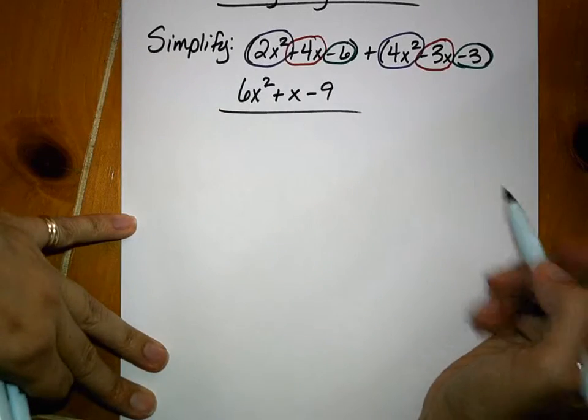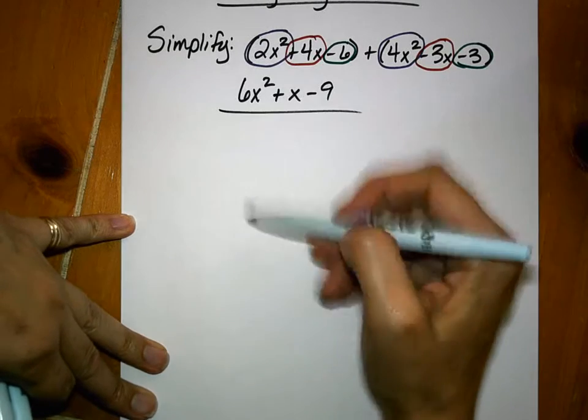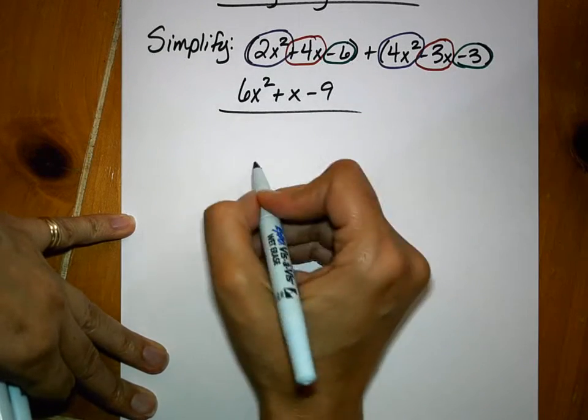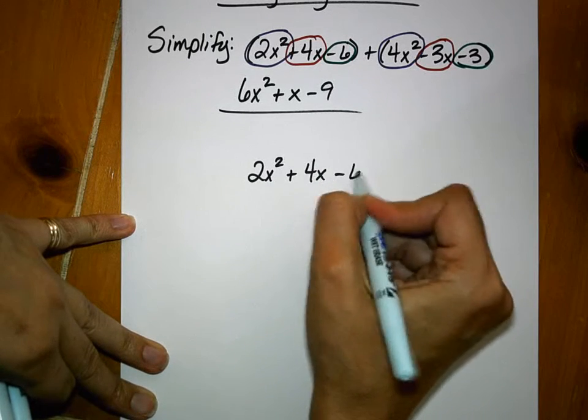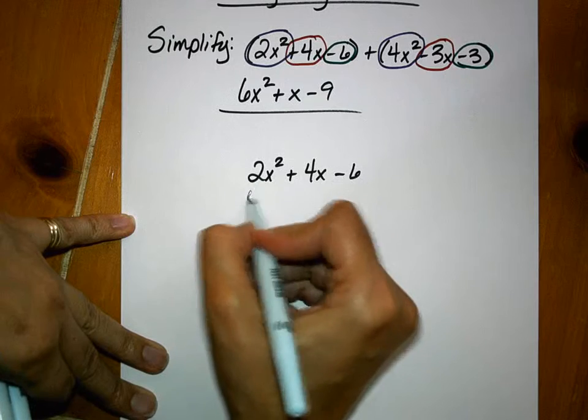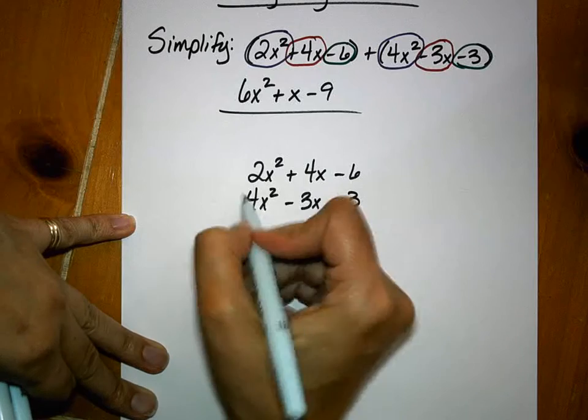Okay, another method is to stack them. So we're going to rewrite the polynomials, making sure that we stack vertically the like terms. So we have 2x squared plus 4x minus 6. And down here we've got 4x squared minus 3x minus 3.